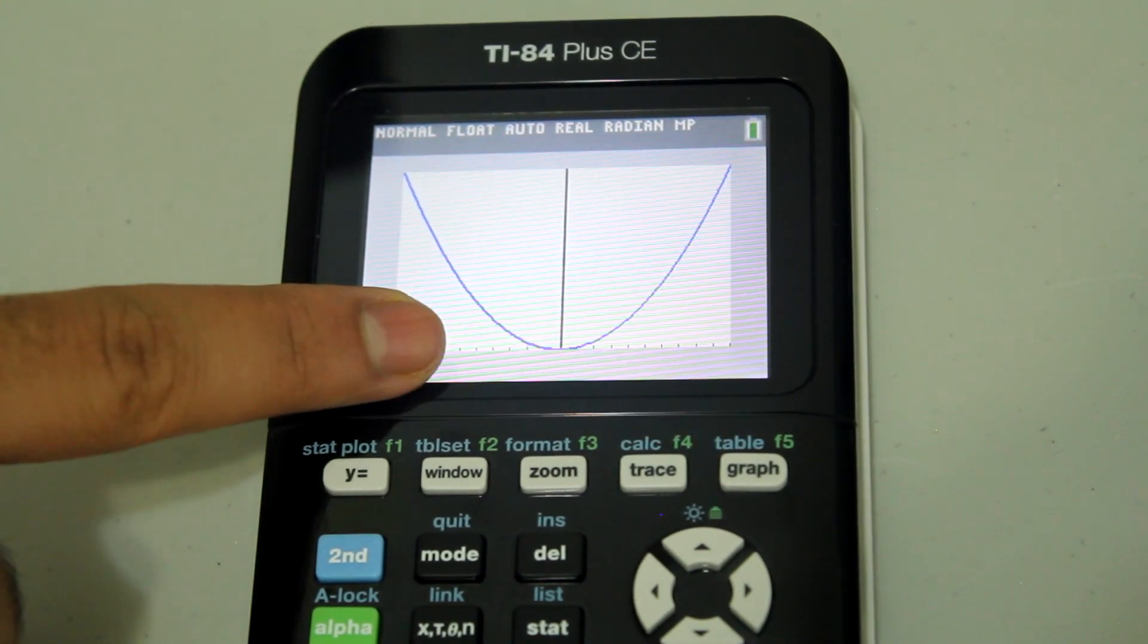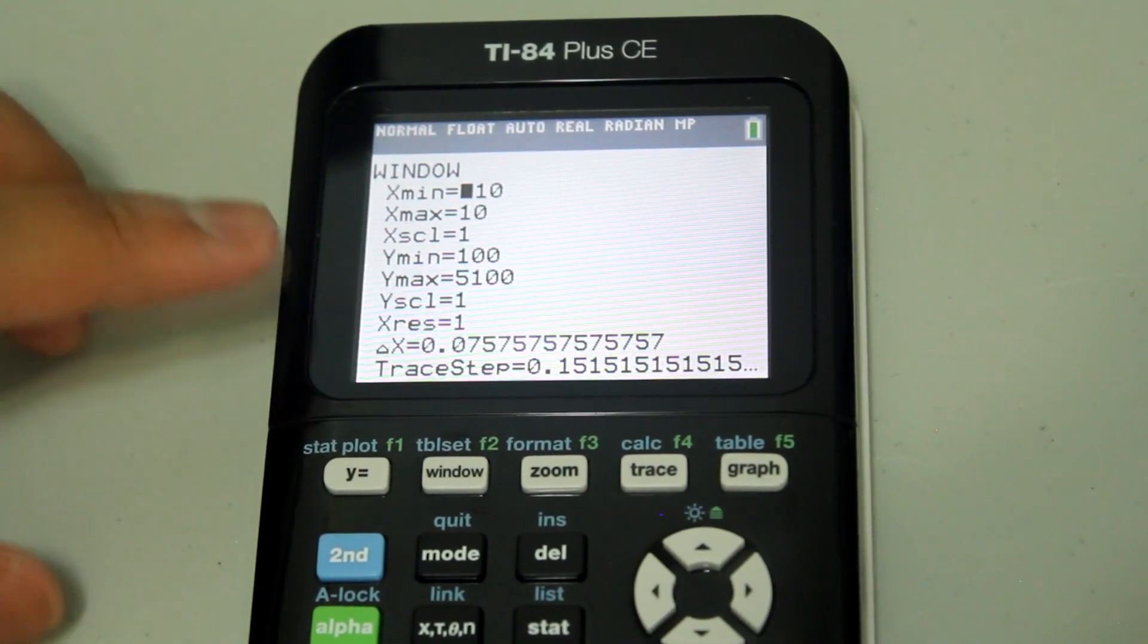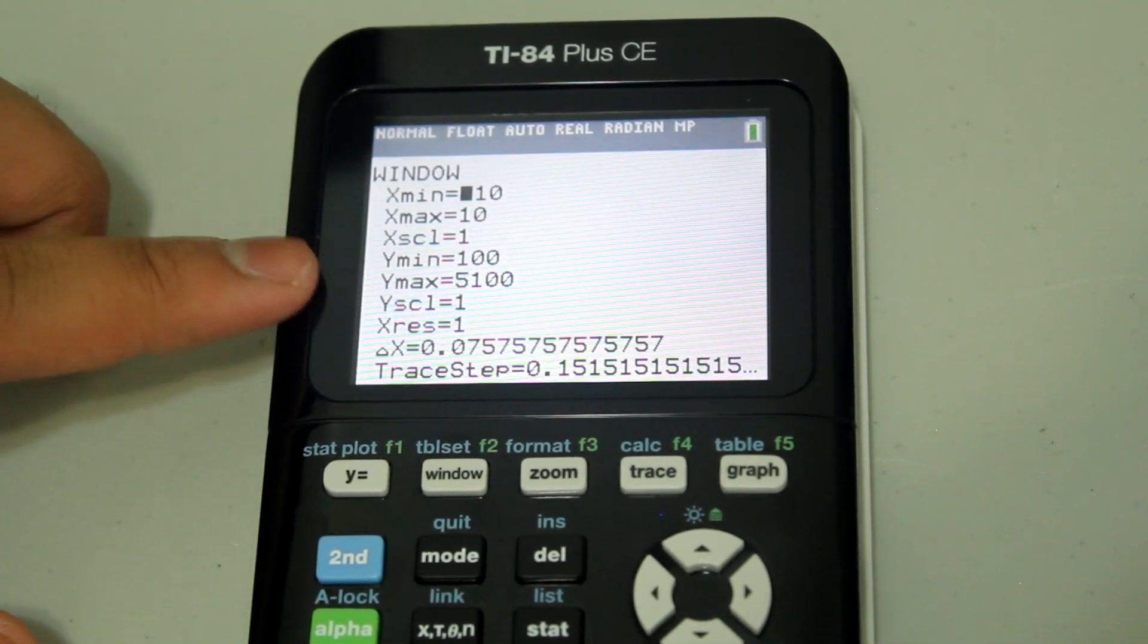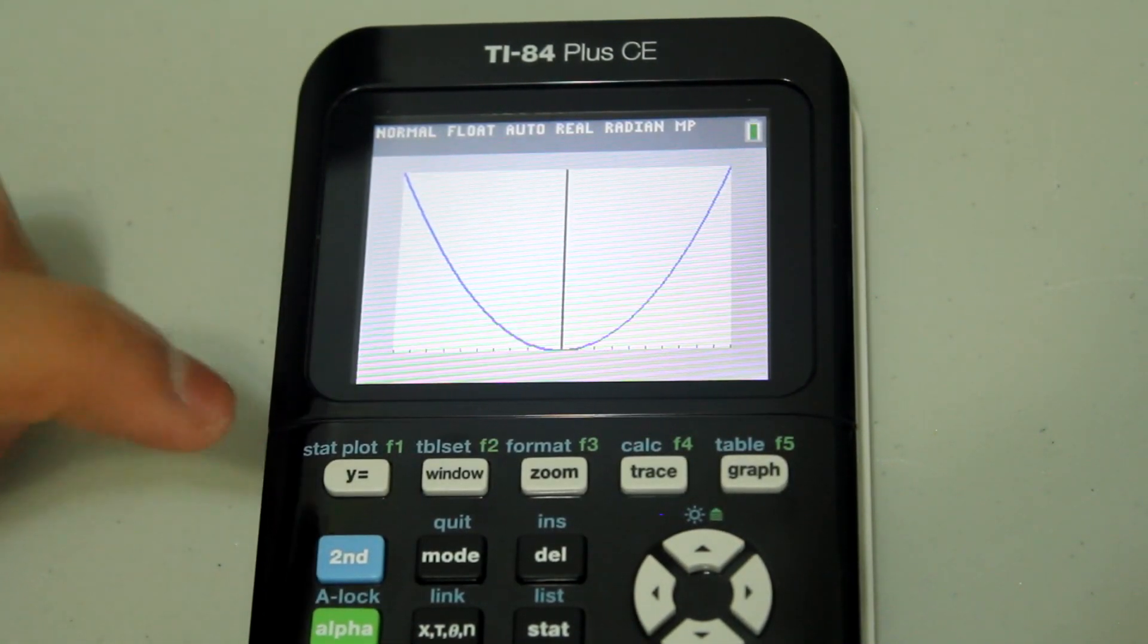But now I see these lines over here. What do they really mean? When I check the window, it shows that my y minimum goes from a positive value to another positive value, which means this is not my x-axis.